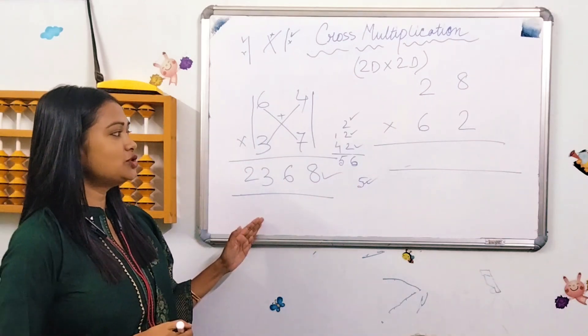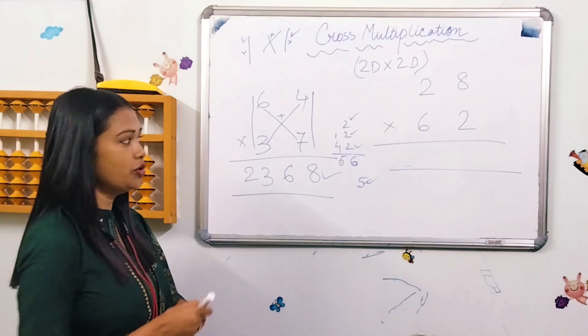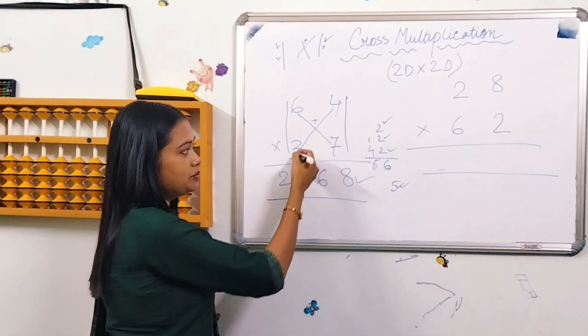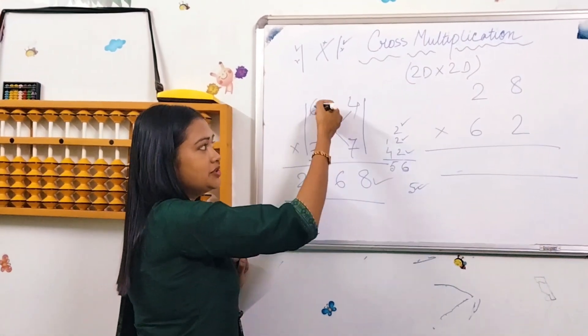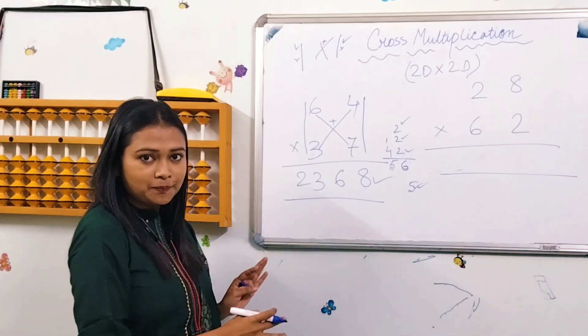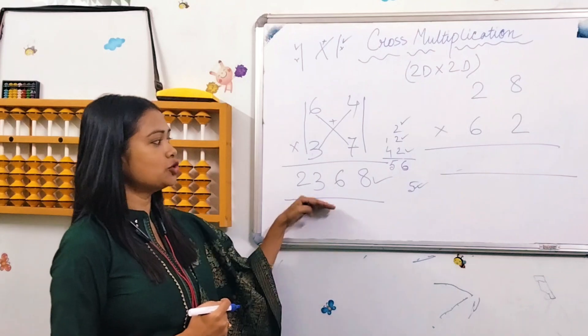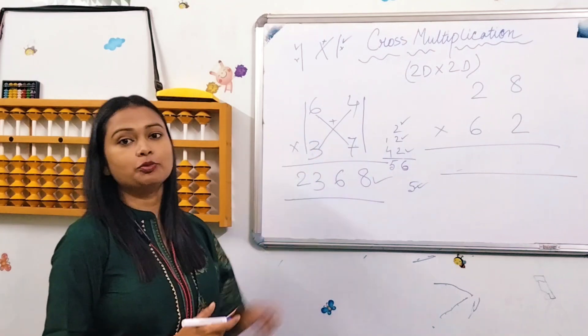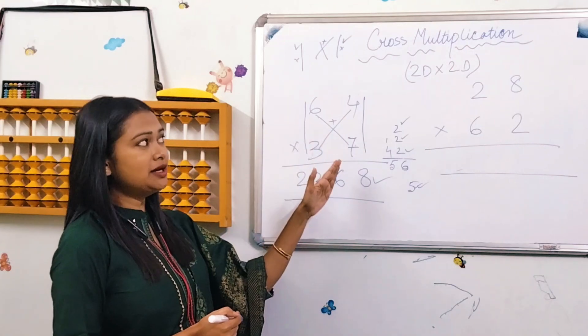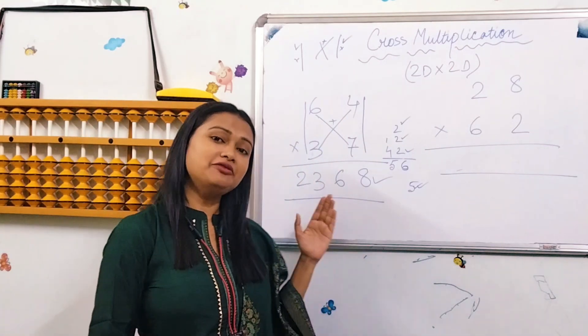Let me explain the steps again. First step: 7 and 4. Second step: cross multiplication with 3 and 4, then 6 and 7. Third step: 3 and 6. This is the multiplication process, a tricky Vedic Math process.